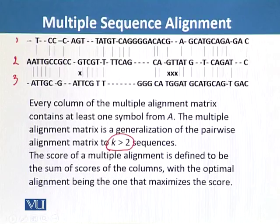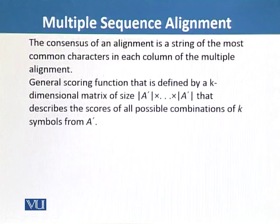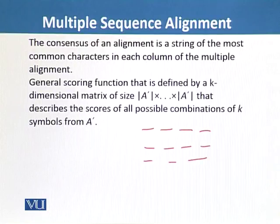The score of the multiple alignment is defined to be the sum of scores of columns, with the optimal alignment being the one that maximizes the score. Just as we studied previously, the consensus of an alignment is a string of the most common characters in each column of the multiple alignment. If we want to say that in the multiple sequence alignment the alphabets should be identical, then it means they are conserved.